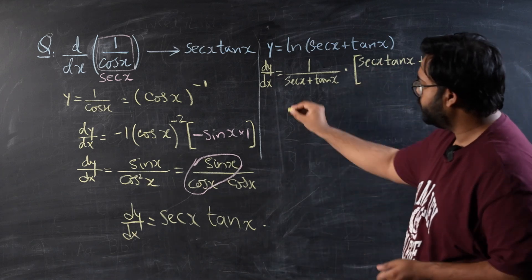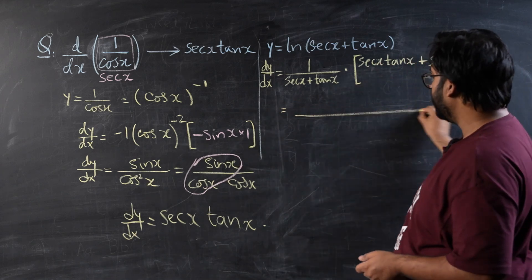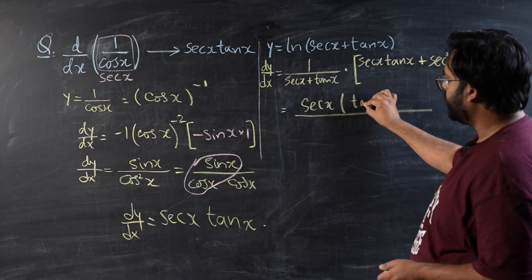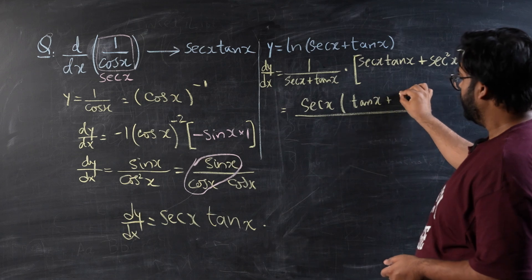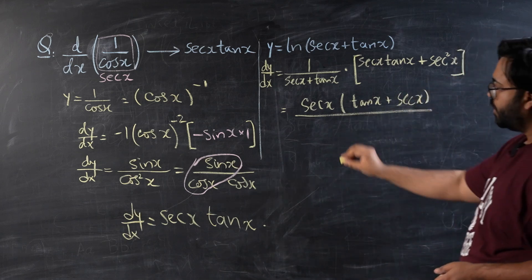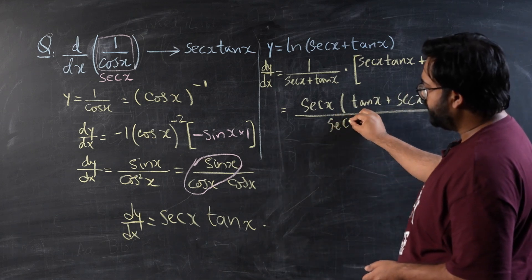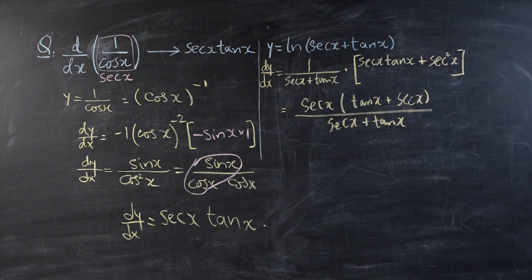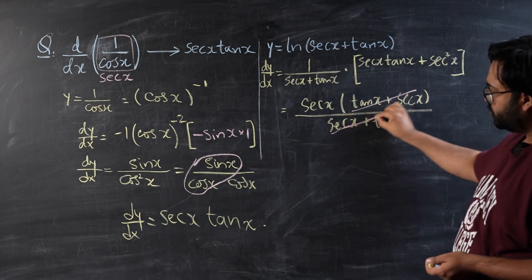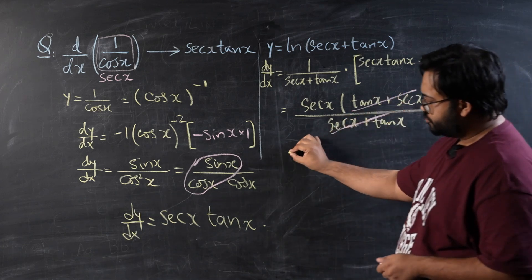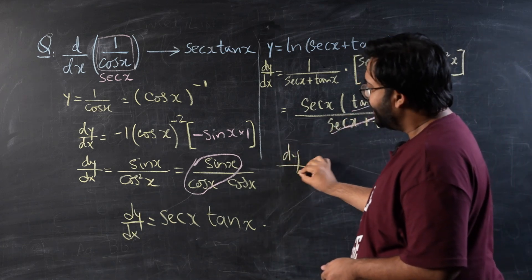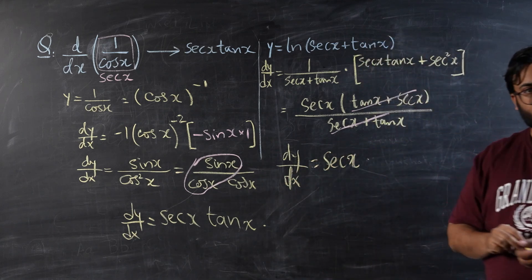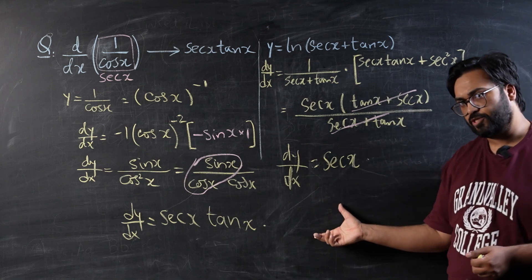Now let's take a common factor in the numerator: sec x can be taken out, giving sec x times (tan x + sec x), over the denominator (sec x + tan x). These two terms cancel, and we can show that dy/dx is equal to sec x. That completes the first part of the question.